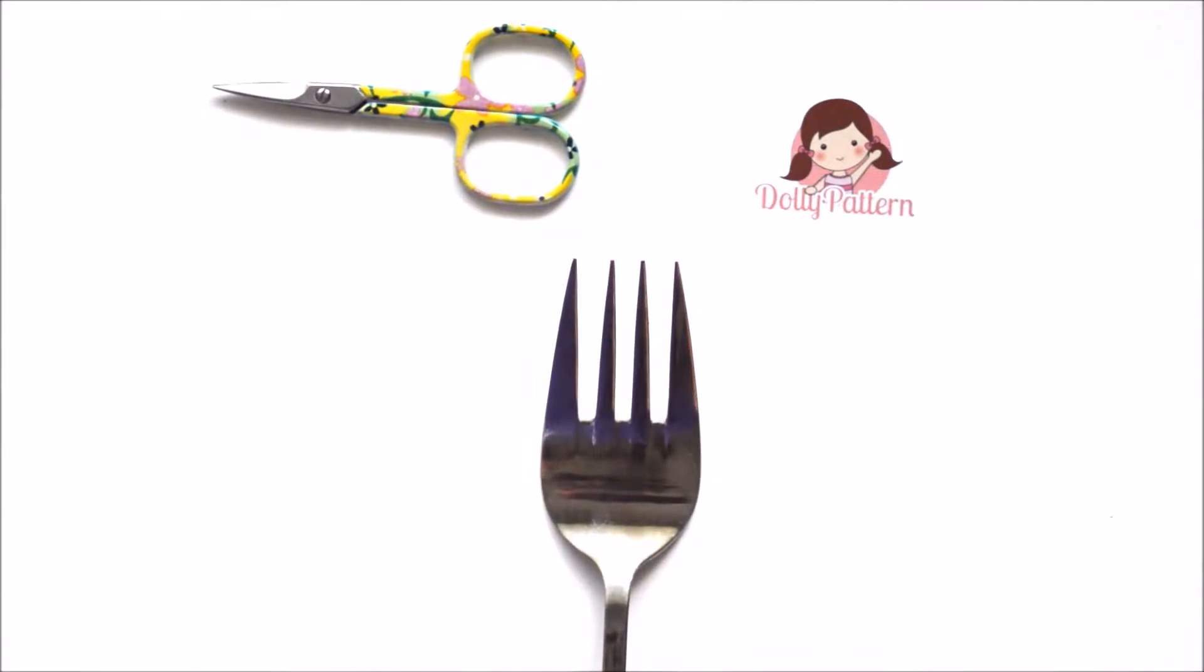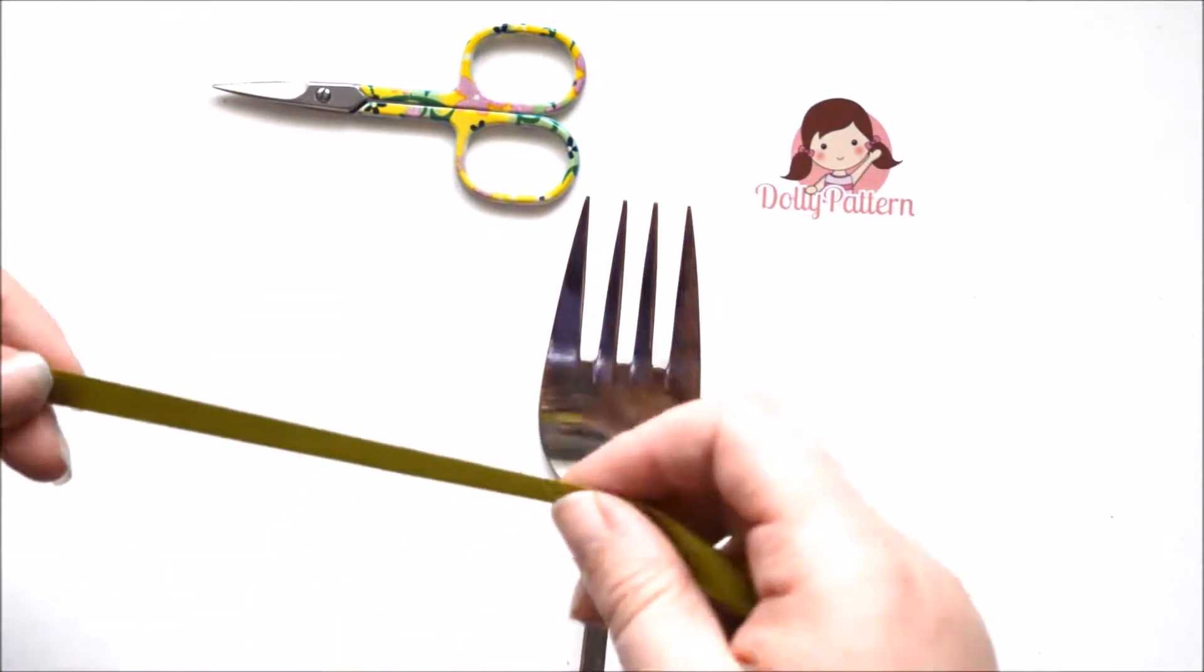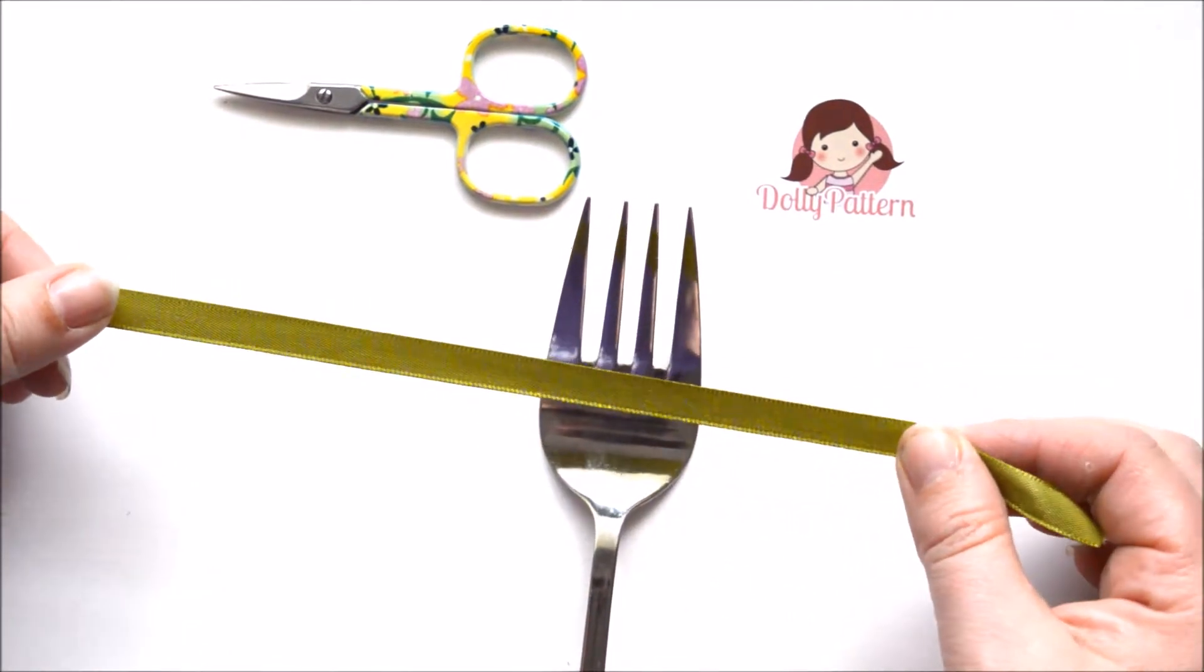You know those little fiddly bows that you see everywhere for crafts and you think they must have the patience of a saint to tie those? Well not necessarily, because there is a trick and all you need is a serving fork, a pair of scissors, and a length of ribbon. This is how easy it is.